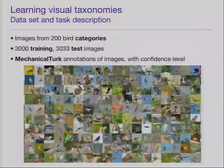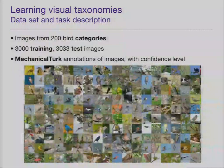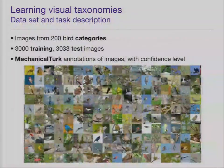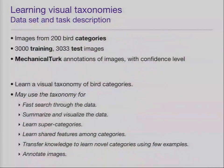Learning visual taxonomies. This is a fun task of learning taxonomies of images from birds. There are images collected from Flickr — 200 bird categories, and in total around 6,000 images. What we want to do is get Mechanical Turk annotations of images together with their confidence level. Shown every image, the Mechanical Turk user tells what color is the beak, what color is the wing, what color is the belly, and so on, and how sure they are about that annotation. We want to learn a visual taxonomy of bird categories, which can be used for fast search through the data, summarizing and visualizing the data, learning supercategories, learning shared features among categories, and so on.